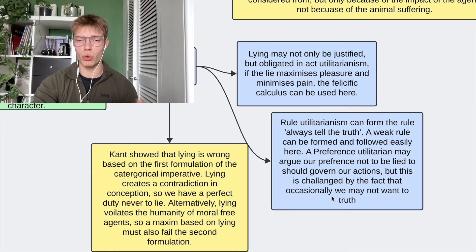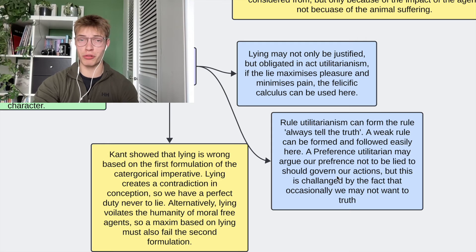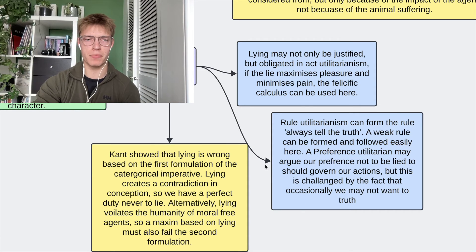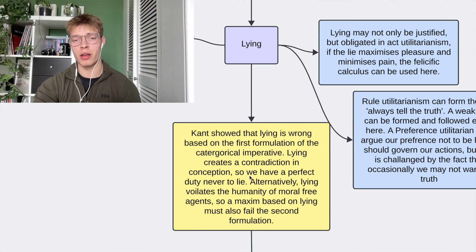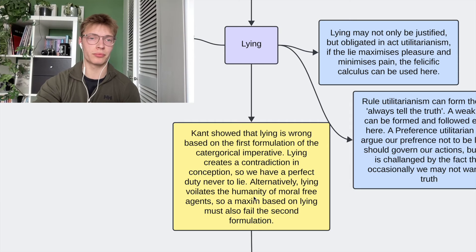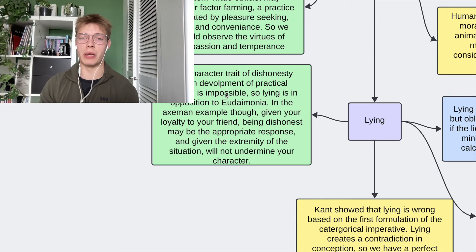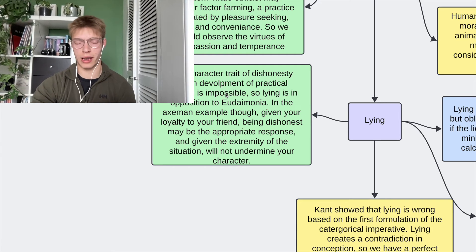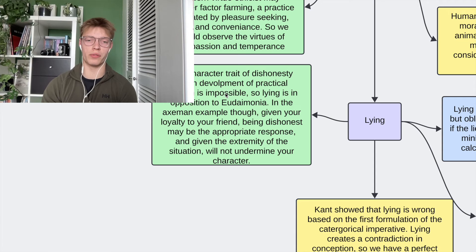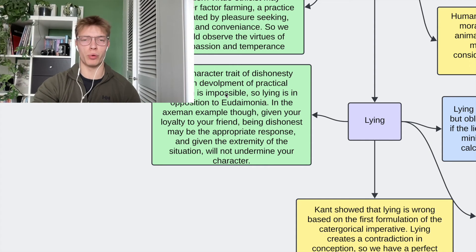The preference utilitarian can also respond here: our preference is to be told the truth, unless it isn't, and then we shouldn't be told the truth — though personally I don't find this approach very satisfying. Kant's approach is really helpful; both the first and second formulations work well for lying. For Aristotle, dishonesty is not a virtue we should habituate, so we should be honest as often as possible. This may change if, for example, an axeman comes to our door asking for the location of our friend — in that case, we observe the virtue of loyalty and the duty to protect our friend, so we might have to lie. Because it's such an extreme example, it wouldn't undermine our character.